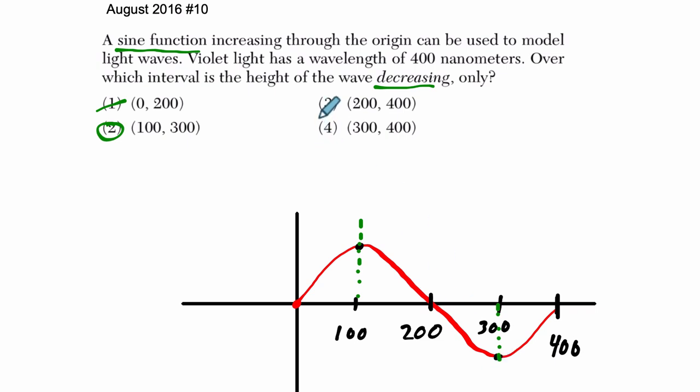Let's just check the rest. 200 to 400, well, it goes decreasing and then it's increasing, so it's not going to work. And then 300 to 400 is an increasing only interval, so that's not going to work as well. So here the answer is choice two.